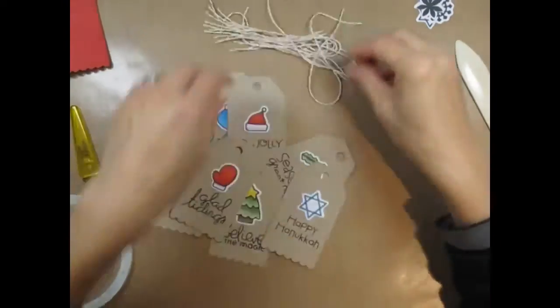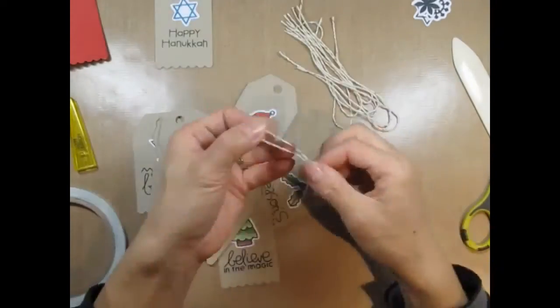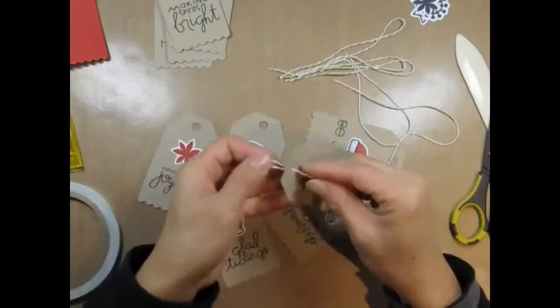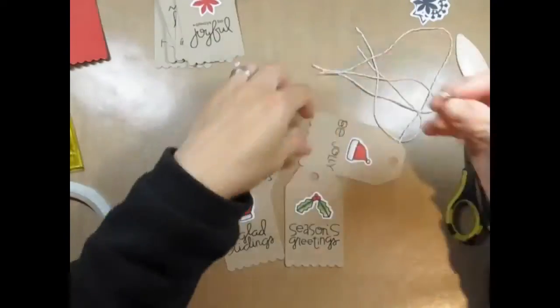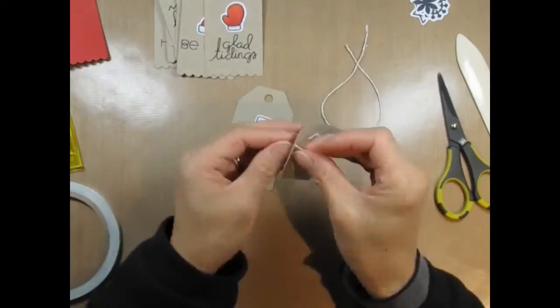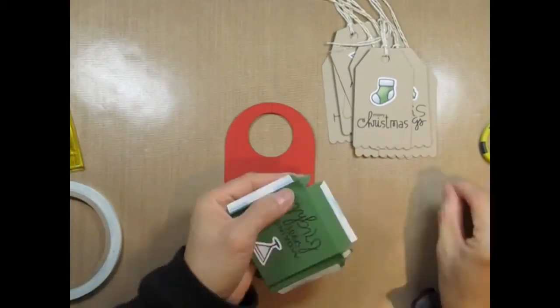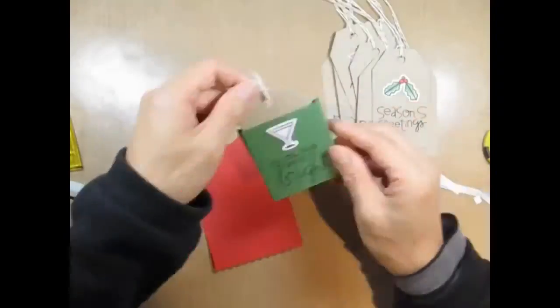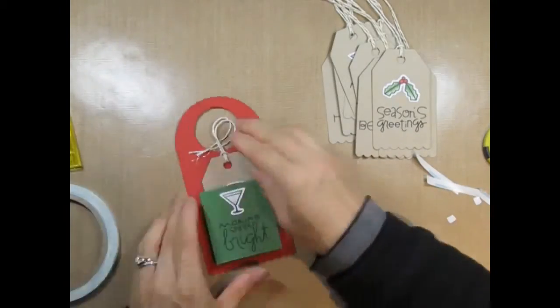I'm attaching gold shimmer twine to five tags and silver shimmer twine to the other five tags. Now I can remove the adhesive from the score tape and I'm using one of the tags as a guide so that I know how low I need to place the pocket on the tag.